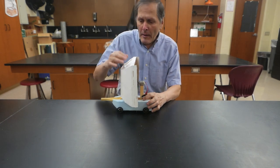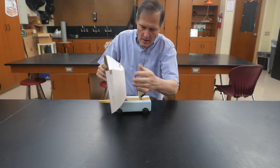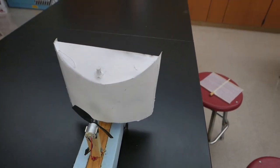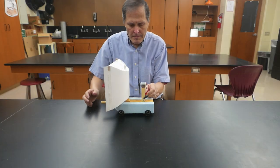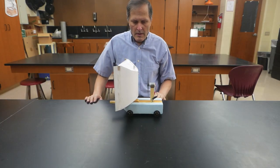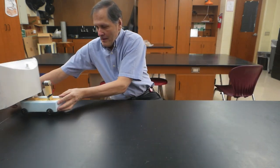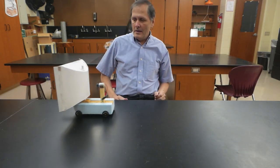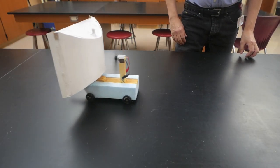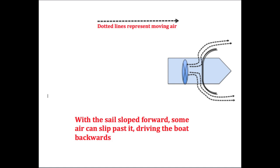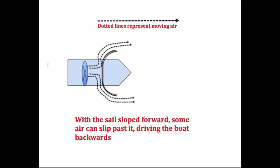Now one last change I want to make is turning this solid sail around. With the rounded side towards the fan, the air can slip around it and still drive the cart backwards.